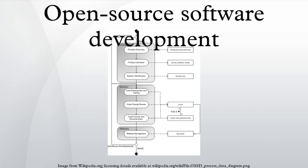Open source software development methods: It is hard to run an open source project following a more traditional software development method like the waterfall model, because in these traditional methods it is not allowed to go back to a previous phase. In open source software development, requirements are rarely gathered before the start of the project. Instead they are based on early releases of the software product, as Robbins describes. Besides requirements, volunteer staff is often attracted to help develop the software product based on the early releases. This networking effect is essential according to Abraham Sunayal. If the introduced prototype gathers enough attention, it will gradually start to attract more and more developers.